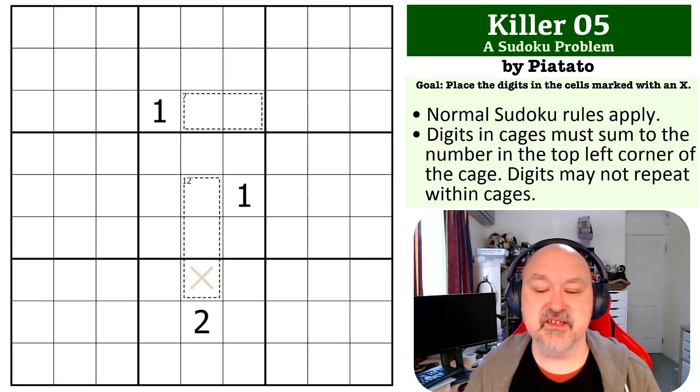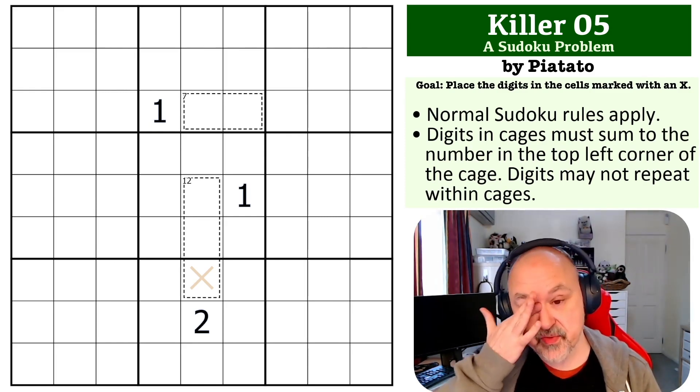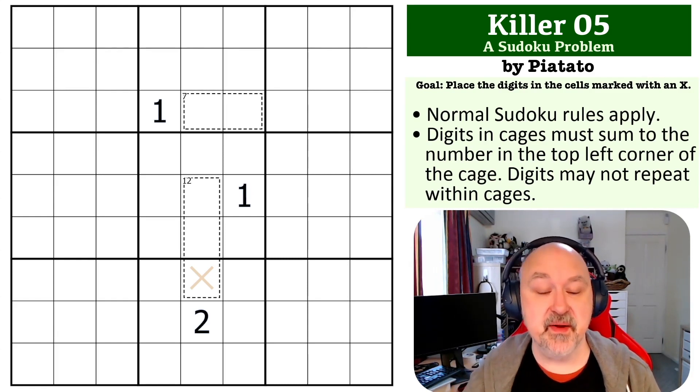Okay, I really like this sort of deduction, because the way this one works is the cages have to bounce off each other. So the first thing we want to look at is this 7 cage. So a 7 cage can only be made up a couple of different, or three different ways, but we can't use the 1.